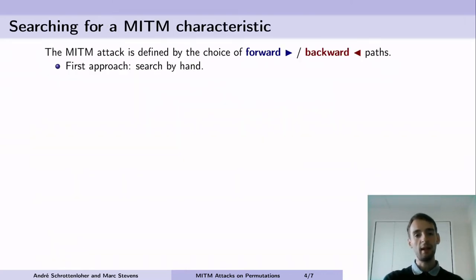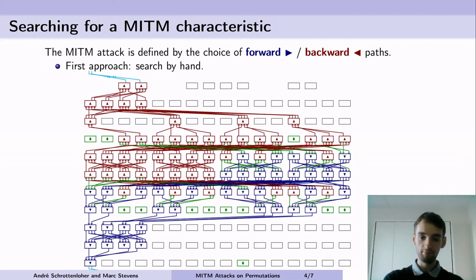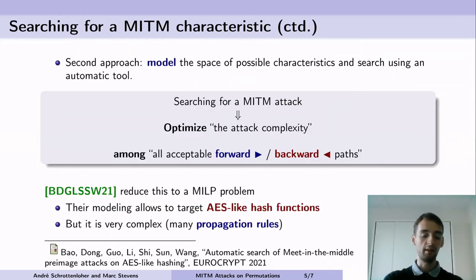A meet-in-the-middle attack is entirely defined by this choice of forward and backward path which we call the meet-in-the-middle characteristic. Of course we can search for them by hand and there are many techniques applicable. The problem is that this path can become quite complicated, especially for example like Haraka. The alternative to finding this by hand is to use an automatic tool and this is a more recent idea. What we're going to do is we model a space of possible meet-in-the-middle characteristics and then we search the best of them that gives us an attack using an automatic tool.